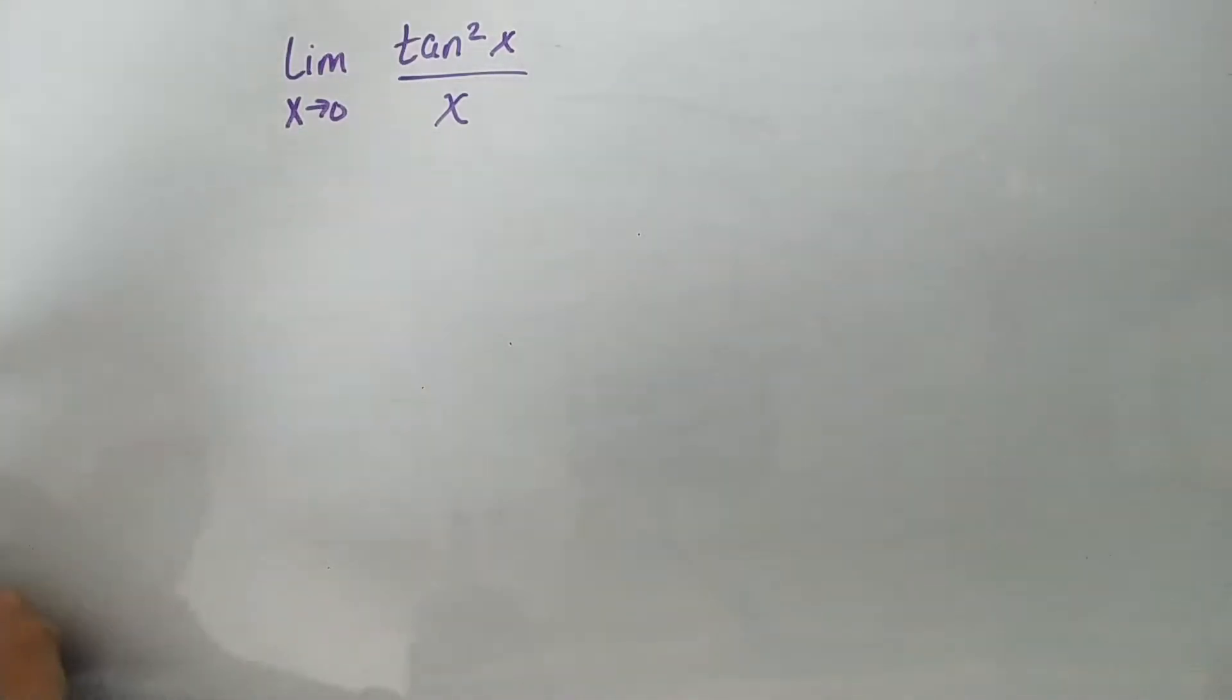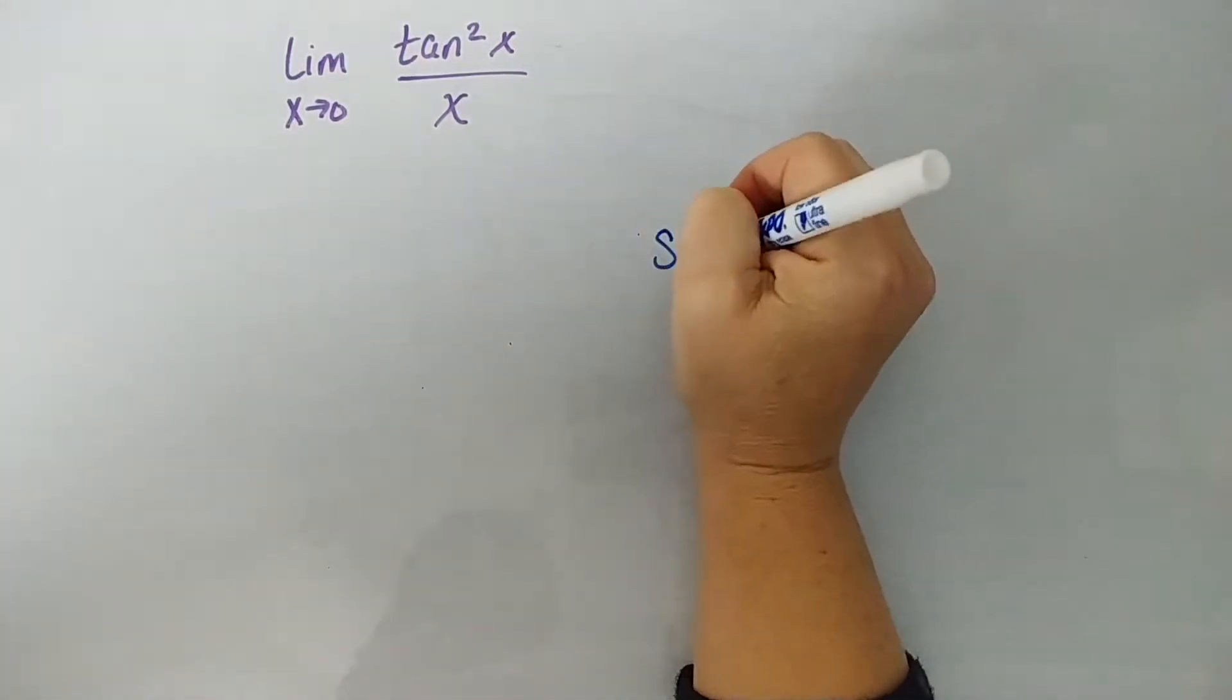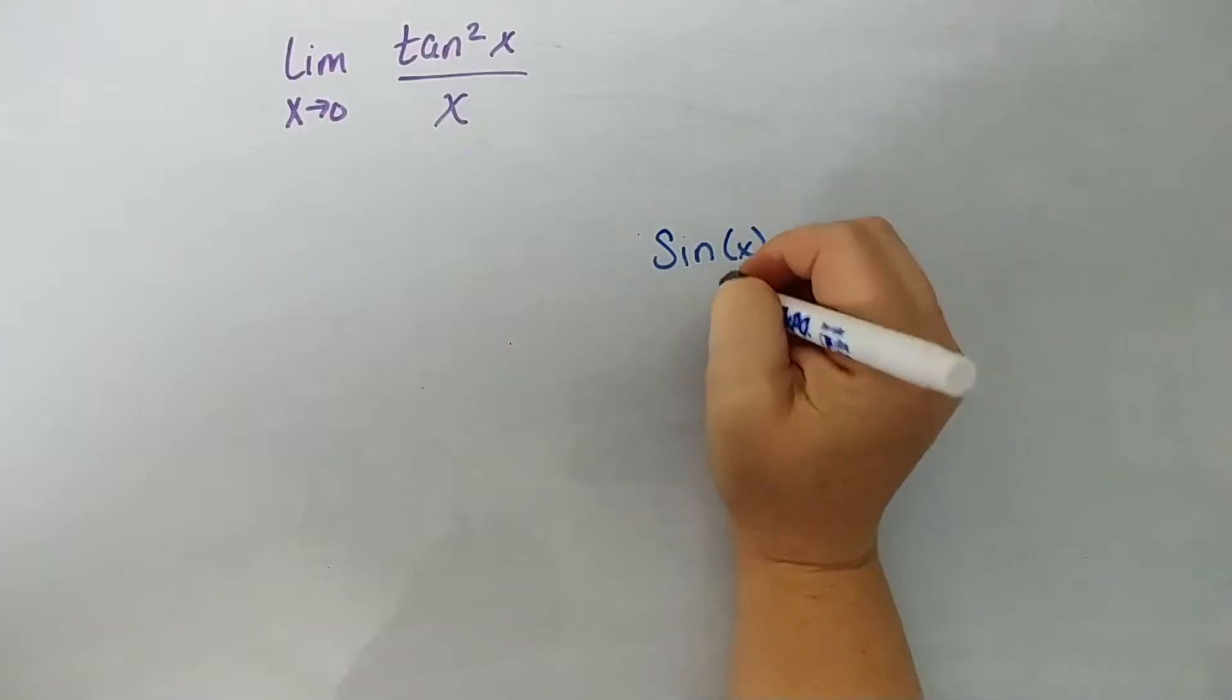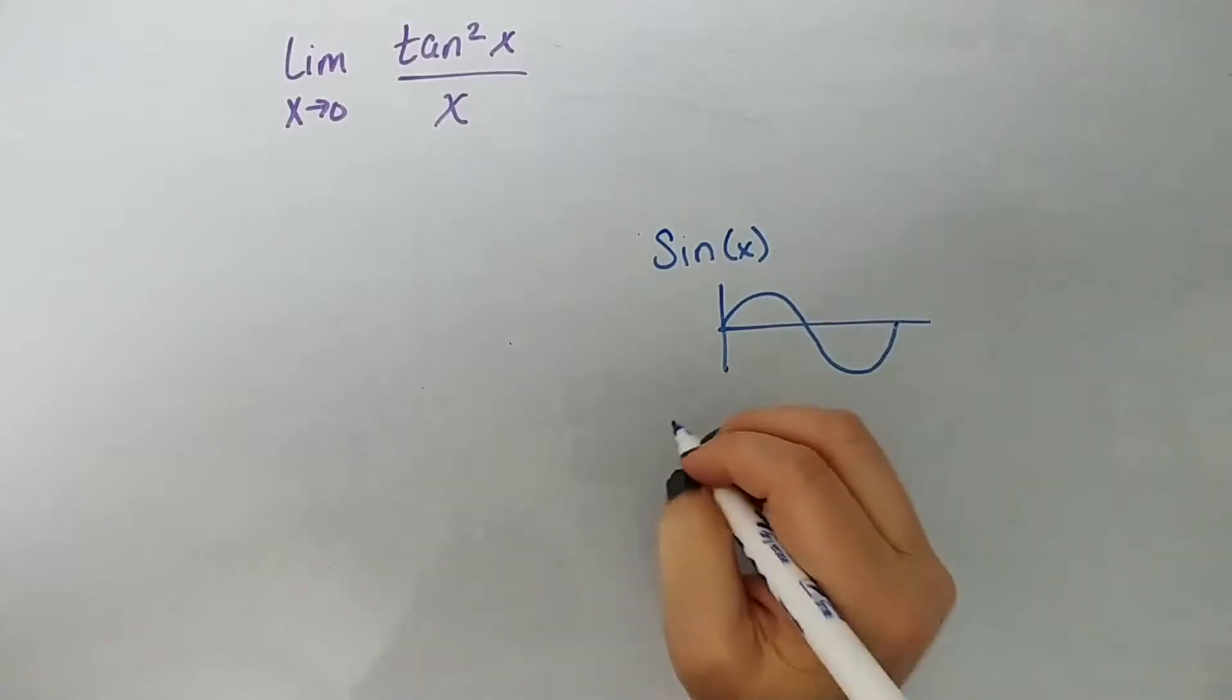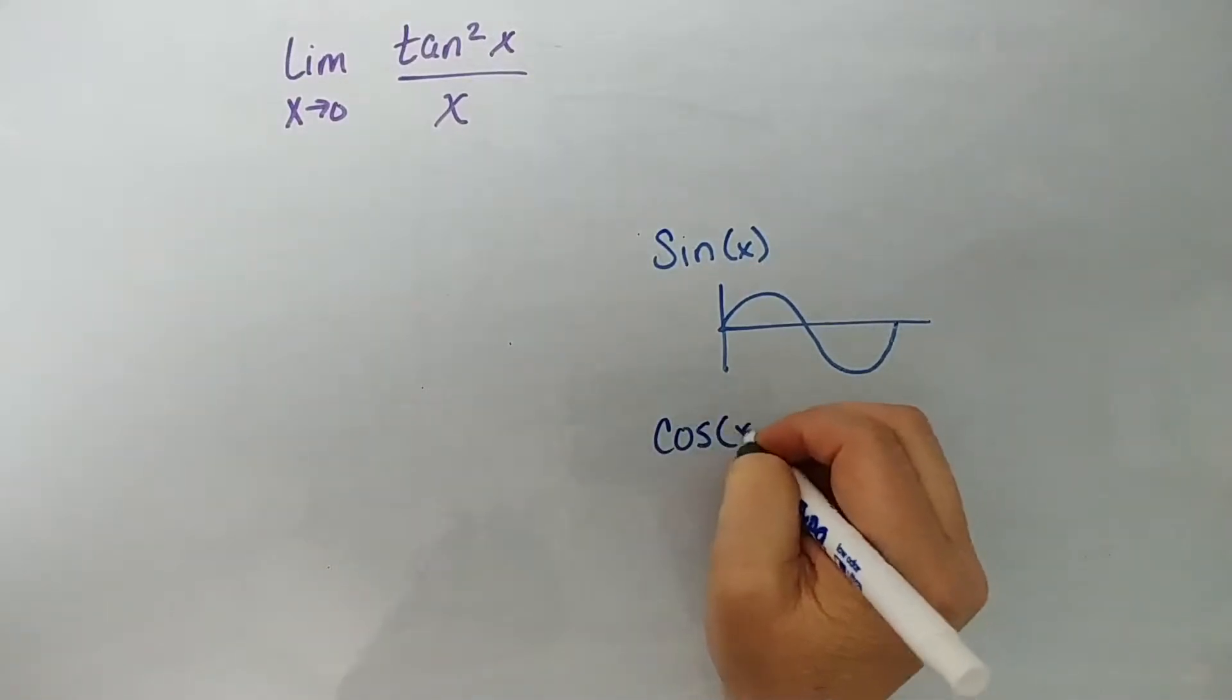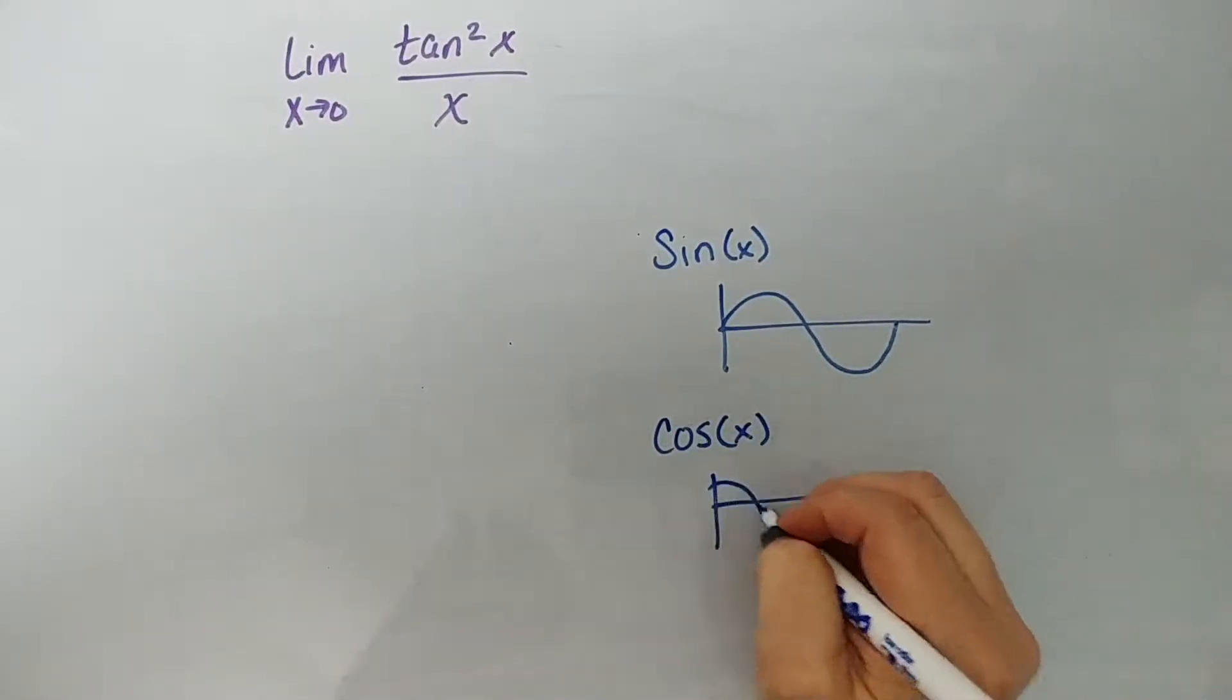So generally speaking, sine and cosine, we know sine of x is defined and continuous everywhere, okay? It's not like tangent where it has breaks. Cosine also is defined and continuous everywhere. Those are the little graphs of sine and cosine you may remember.